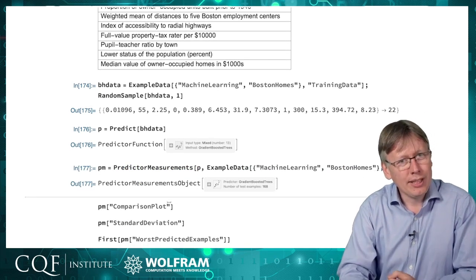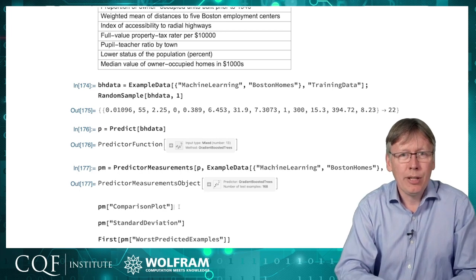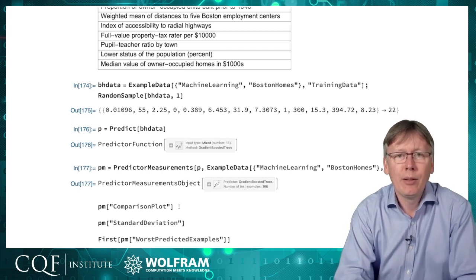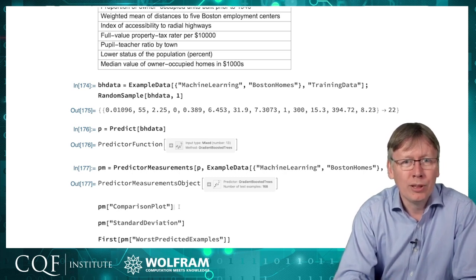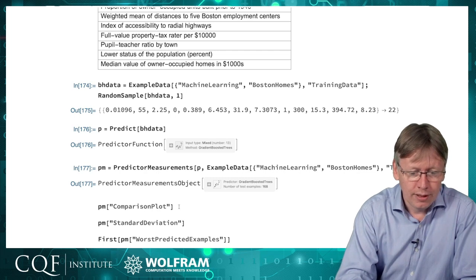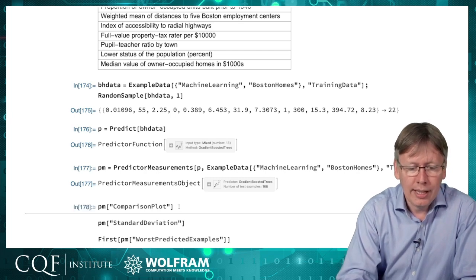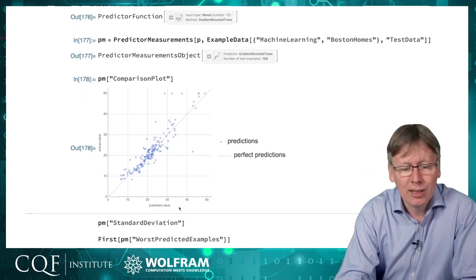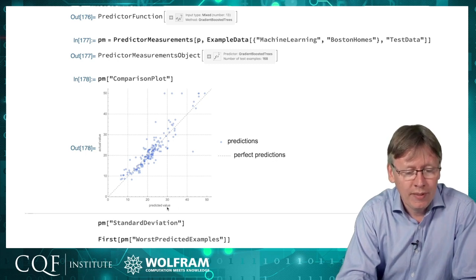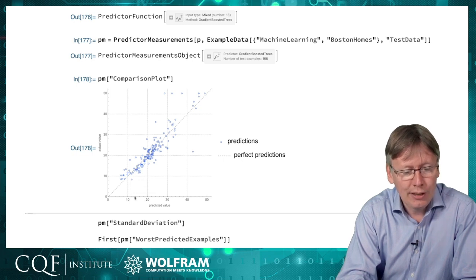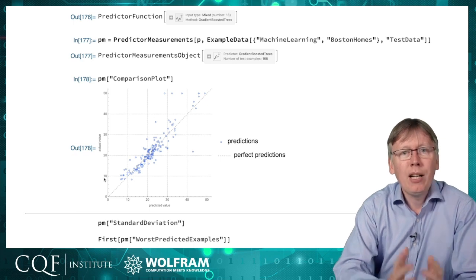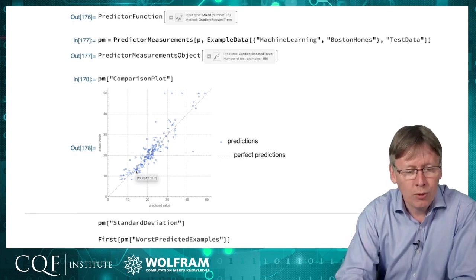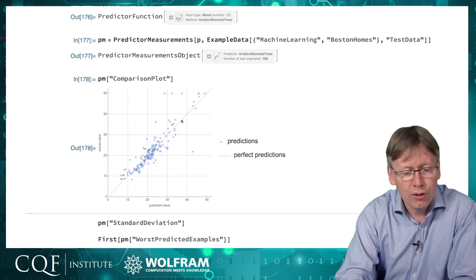Because these are continuous numbers, the tests that we used like accuracy and confusion matrix before are not so appropriate because they're geared around absolutes of in the right class or not. One of the most useful is a comparison plot, which is just plotting the input versus the output value. Here we have a data point that was predicted to be a $15,000 flat, but actually was a $9,000 flat. The perfect prediction is everything along the dotted line.